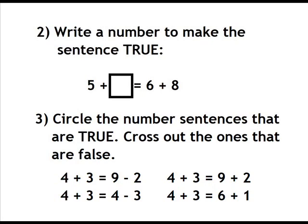Number 2. Write a number to make the sentence true. Number 3. Circle the number sentences that are true. Cross out the ones that are false.